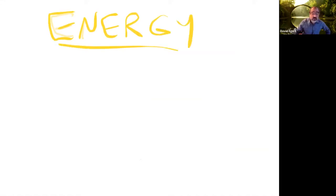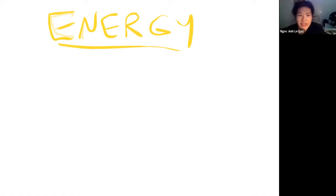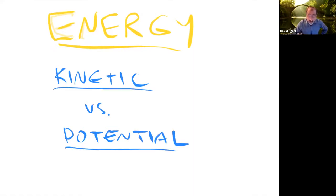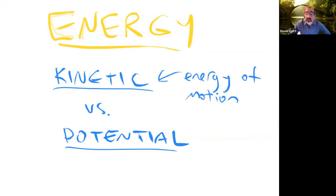What are the two broad categories that energy takes? Kinetic energy and potential. Exactly - kinetic versus potential. Kinetic is energy of motion. Anything that is moving has kinetic energy. One half mv squared gives you the amount of energy in joules if you've taken chemistry.